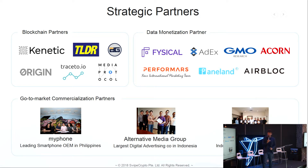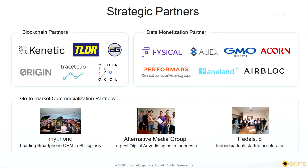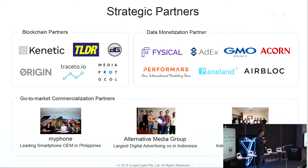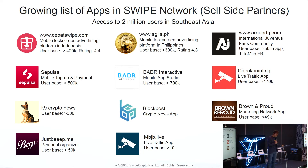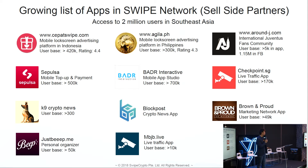Some of our blockchain partners — as mentioned, we are building our decentralized marketplace on the Origin Protocol. Our data monetization partners include GMO Research, a listed company in Japan dealing with market research; Acorn, focused in Singapore and Hong Kong; Performas, focused in Korea; and Paneland, focused in China. Our owned and operated apps — Chapak Swipe, Agalas Reward, and Blockposts — have about one million users. We partner with about 20 other apps, bringing in another million users in Southeast Asia, for a total of two million users on Swype.